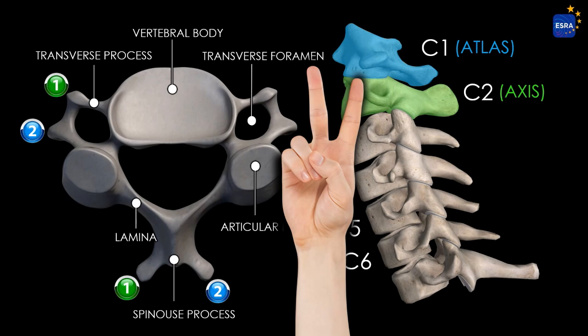These vertebrae are structurally adapted to provide precise and controlled neck mobility, enabling flexion, extension, lateral bending, and rotation of the head and cervical spine, while simultaneously offering protection to critical neurological and vascular structures.